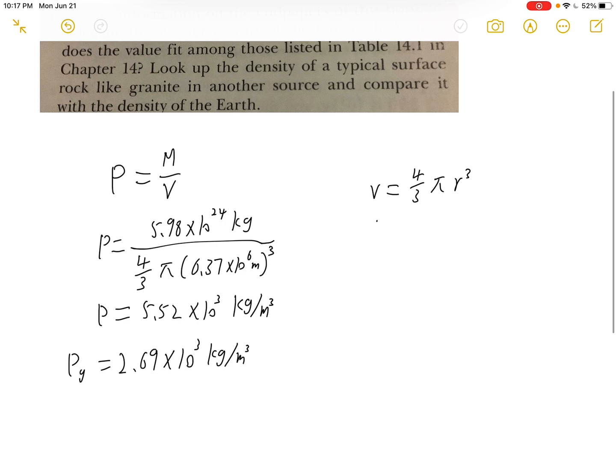And by comparing the density of Earth and the density of granite, we can get the conclusion that the density of Earth is greater than the density of granite. And that would be the answer for part B.